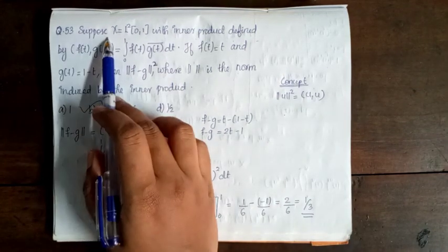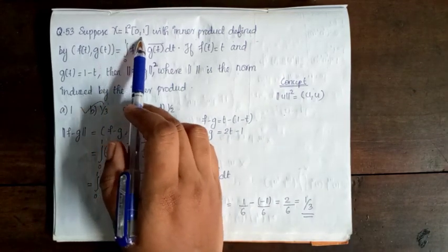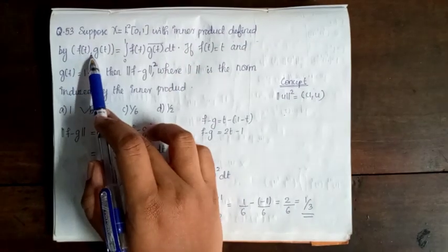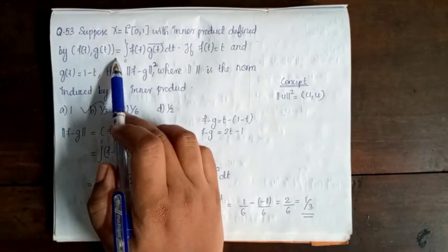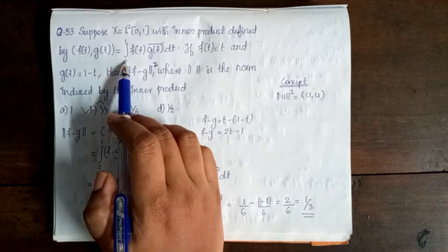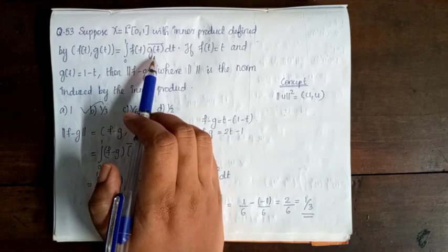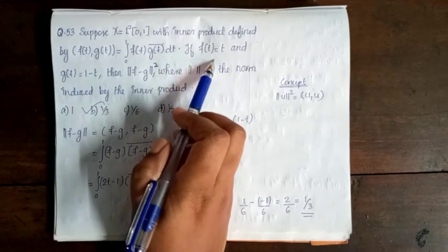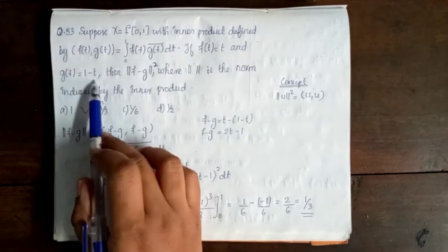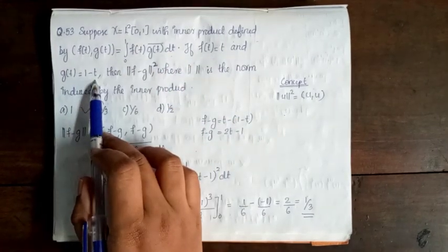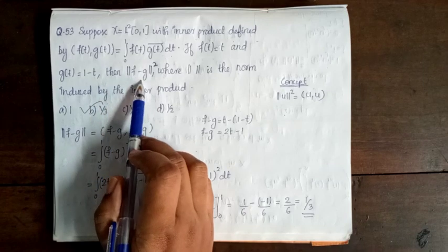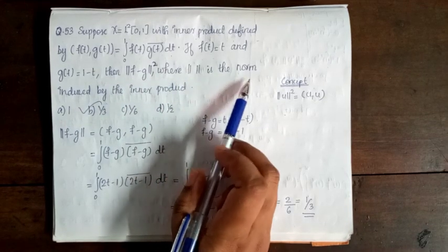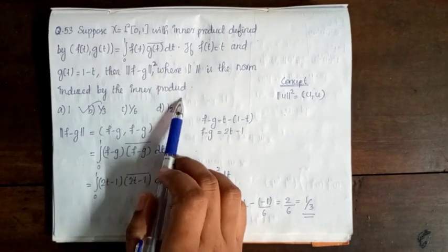Question 53. Suppose X is equal to L² [0,1] with inner product defined by ⟨f(t), g(t)⟩ = integral from 0 to 1 of f(t) into conjugate of g(t) dt. If f(t) = t and g(t) = 1 − t, then find ||f − g||² where the norm is induced by the inner product.